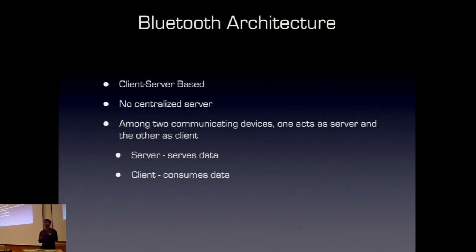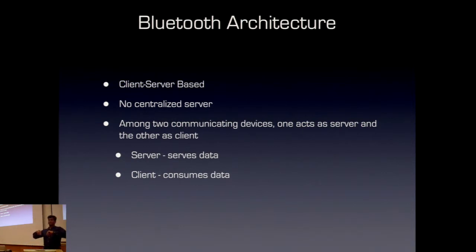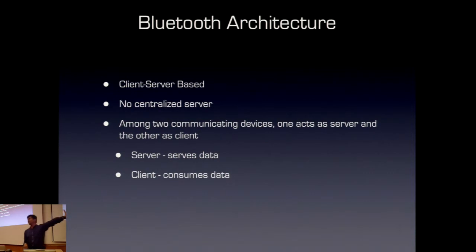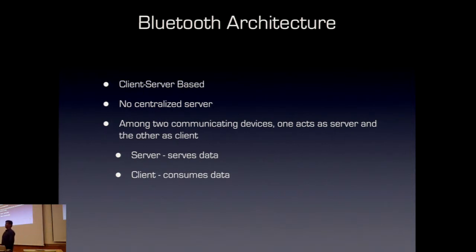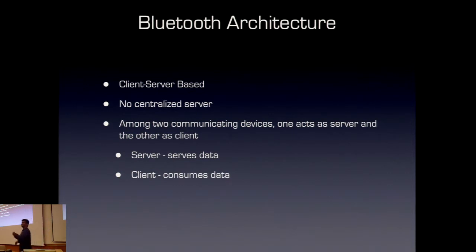The geek stuff: Bluetooth follows a client-server architecture — there's no centralized server but it's peer-to-peer. The server serves data and the client consumes data. In the case of a thermostat, the thermostat is the server and the app that displays your temperature is the client. In the case of a car key inside your phone, the phone is the server which has your keys — it serves your keys to the client, which is your car.